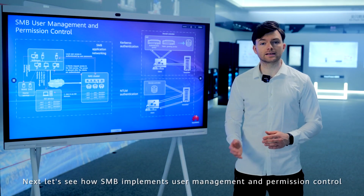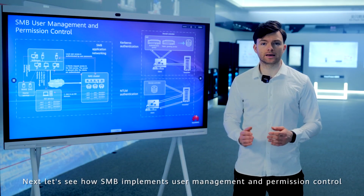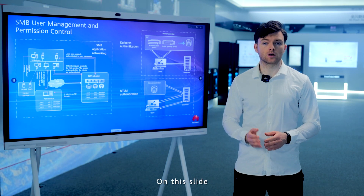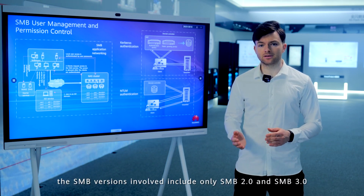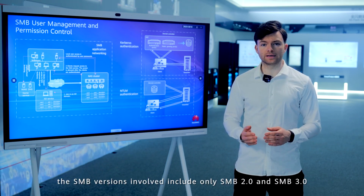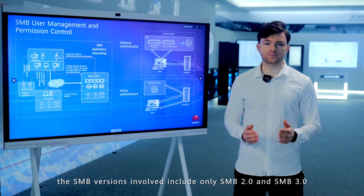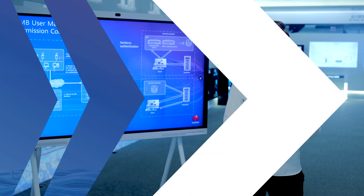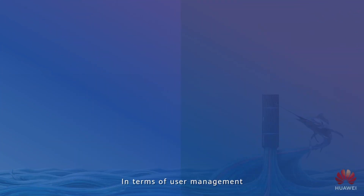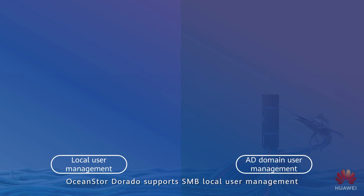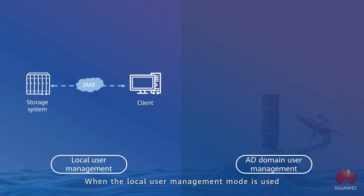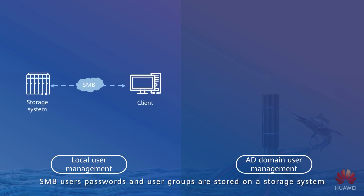Next, let's see how SMB implements user management and permission control. On this slide, the SMB versions involved include only SMB 2.0 and SMB 3.0. In terms of user management, OceanStore Dorado supports SMB local user management and AD domain user management. When the local user management mode is used, SMB users, passwords, and user groups are stored on the storage system.